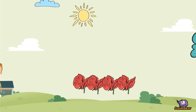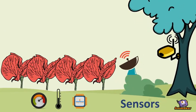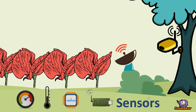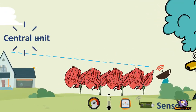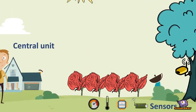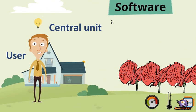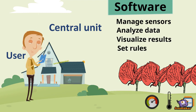But how can he do it? He can place sensors in different parts of the field to measure environment and climate conditions and plant changes. Then data from all sensors are transmitted to a central unit where they can be processed by software. The software is designed to manage sensors, analyze the data, visualize the results, and set rules for notifications to inform other systems or users about important situations.